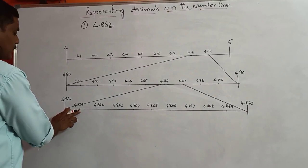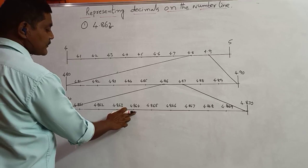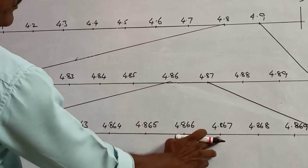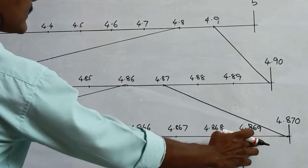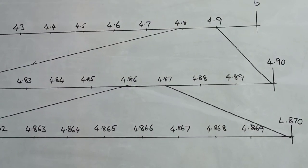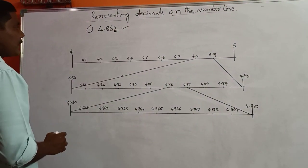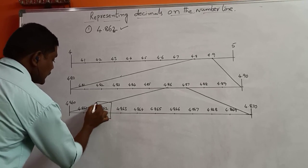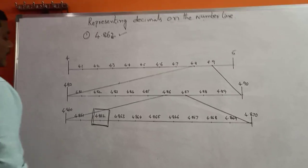The next parts are 4.861, 4.862, 4.863, 4.864, 4.865, 4.866, 4.867, 4.868, 4.869, 4.870. So the given decimal 4.862 is located here. This is the required decimal represented on the number line.